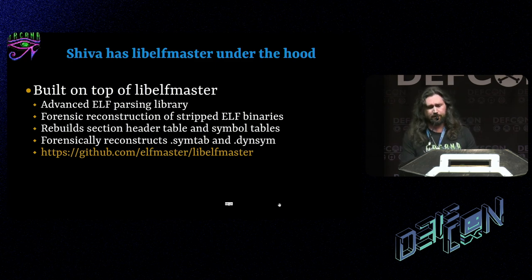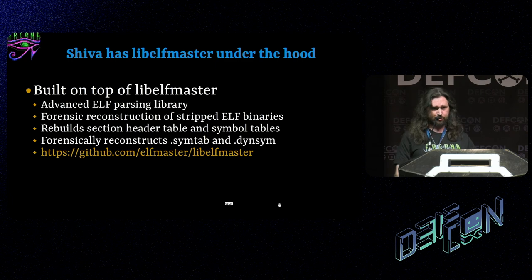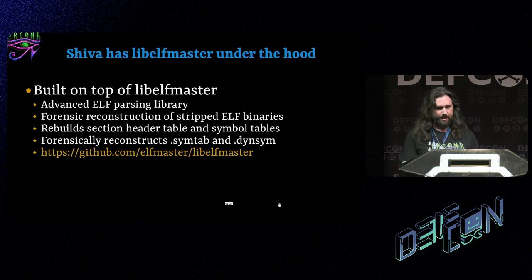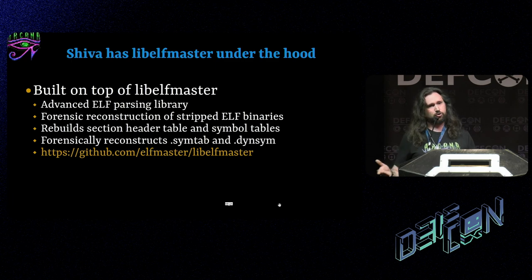Shiva is built on top of LibElfMaster, a library I wrote around 2018. It forensically reconstructs broken binaries under the hood — if a binary has no section headers or symbol tables, it will reconstruct those based on the EH frame, the dynamic segment, and other things, recreating the symbol table internally. So even though Shiva is symbolically driven, it can still work on stripped binaries because of that.